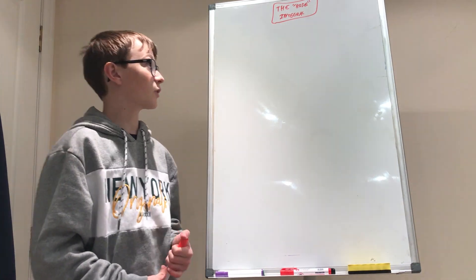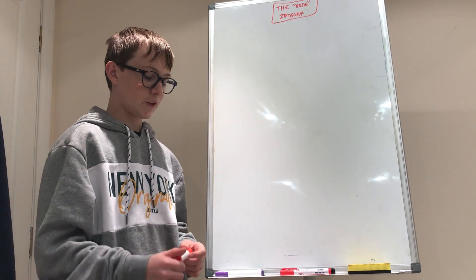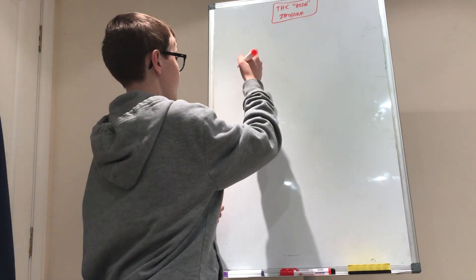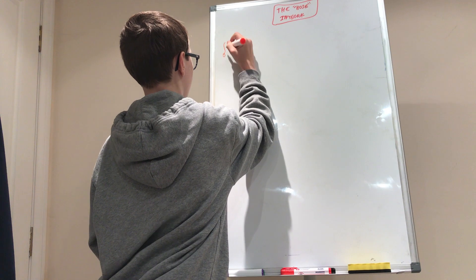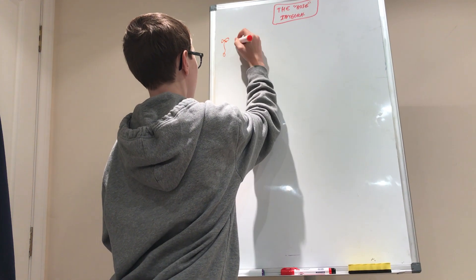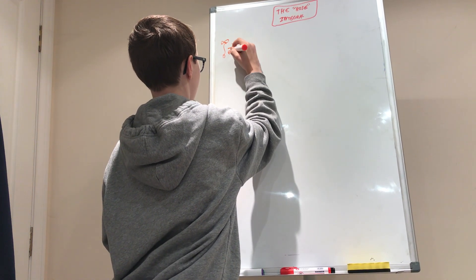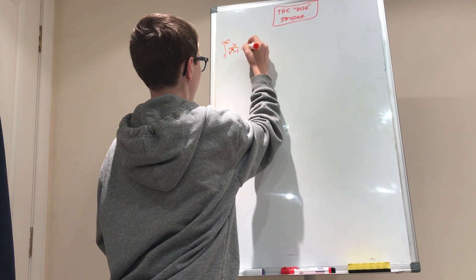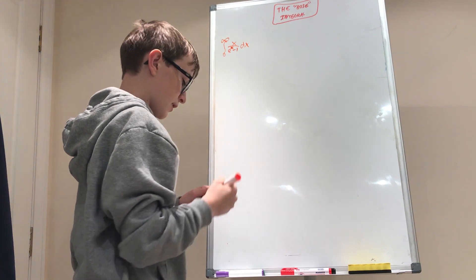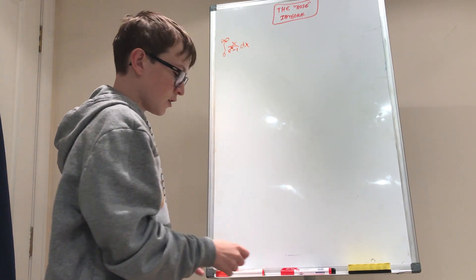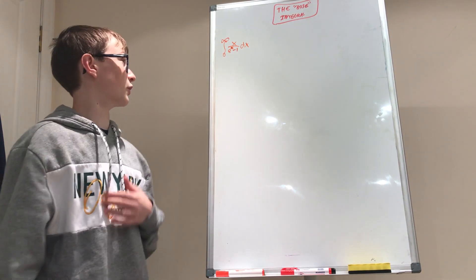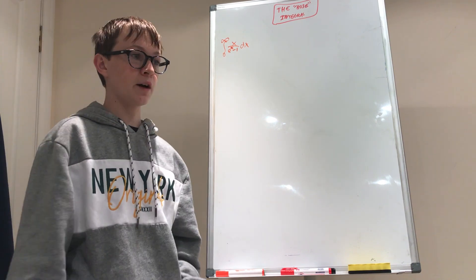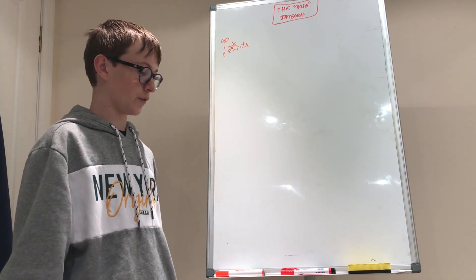Hello everybody, welcome back to another Gregorius Maths video. Today we'll be doing the Basel integral, which is the integral between 0 and infinity of x over e to the x minus 1 dx. And to do this, we're going to take a detour and look at the gamma and the zeta function, both of which I've introduced in different videos respectively.